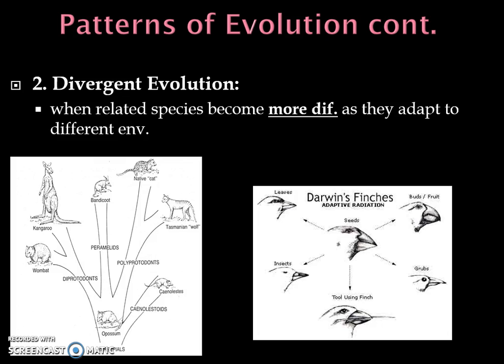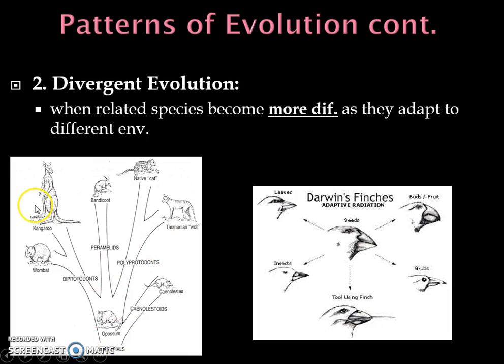Then there's divergent evolution, where related species become more different over time. Think about Darwin's finches: they were all in different environments with different food sources, and their beaks slowly became more specialized and adapted to whatever food type was available on their island. We also see this with mammals adapting to whatever type of environment they're in. This is more like our homologous structures example.